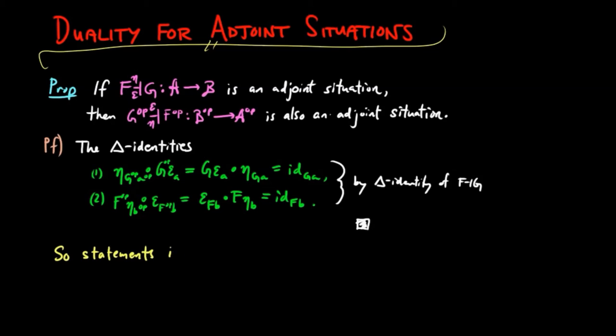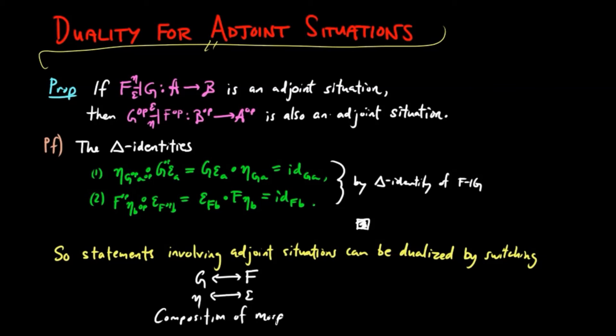So statements involving adjoint situations can be dualized carefully by switching G and F, the unit and co-unit, and all compositions that occur in the categories A and B.